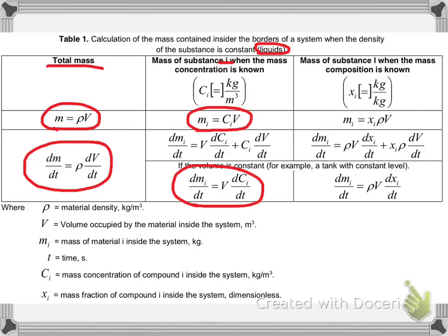And if what we know is the mass composition of our substance, then the mass of substance i will be its mass composition times the density of the solution times the volume of our system. And the derivative, when the volume and density are constant, will be the derivative of the mass of i with time is equal to the density of our solution times the volume times the derivative of the mass composition of i with time.